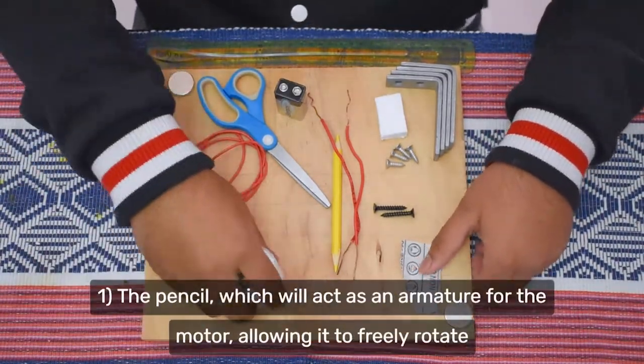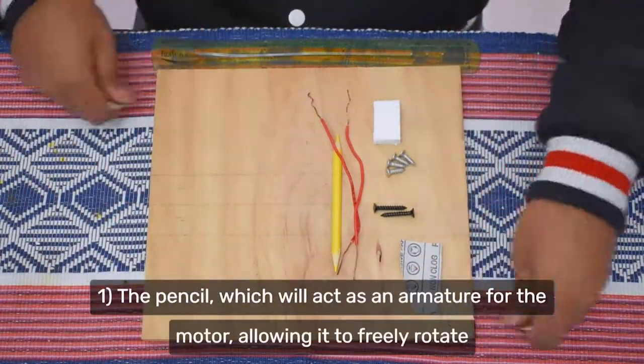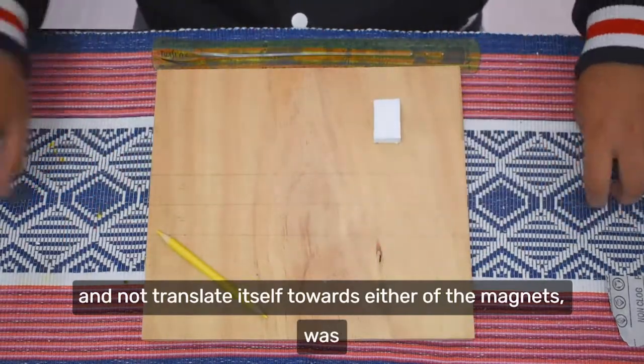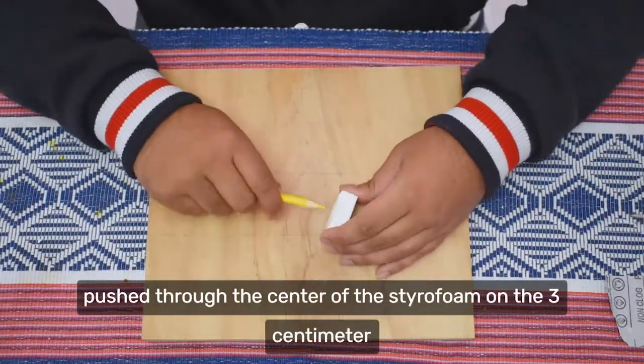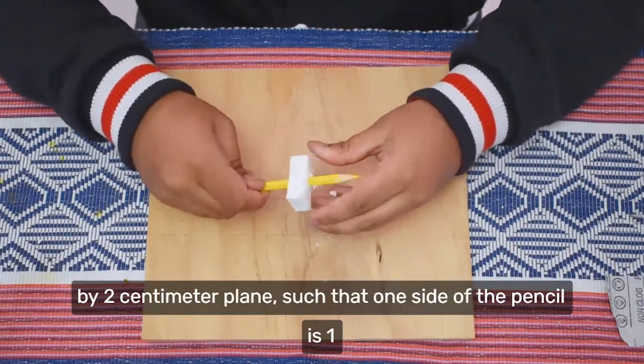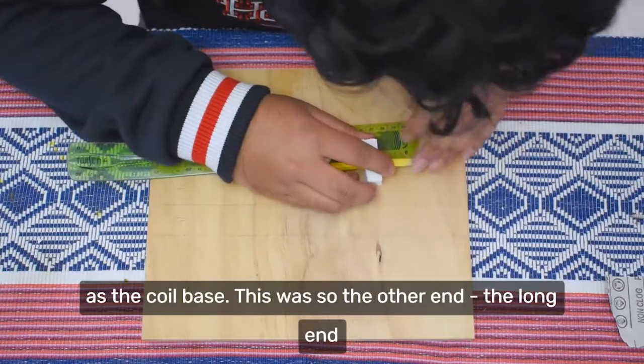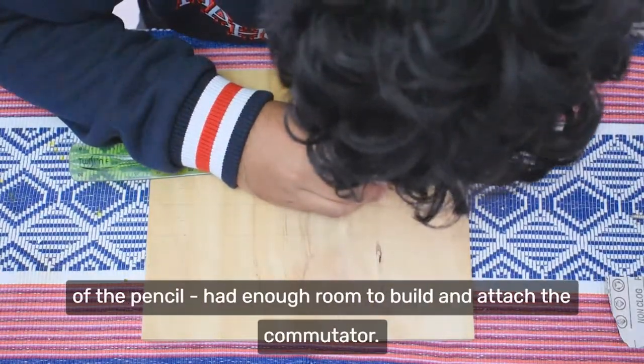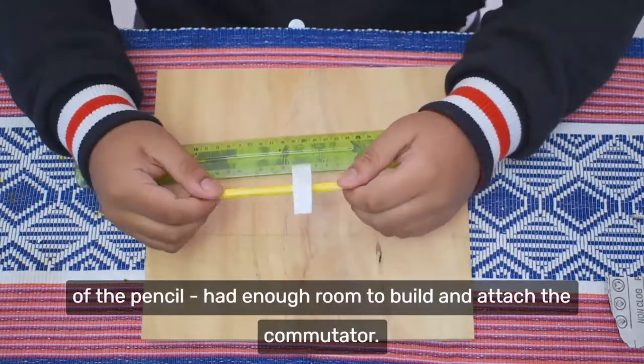Now for the method. 1. The pencil, which will act as an armature for the motor, allowing it to freely rotate and not translate itself towards either of the magnets, was pushed through the centre of the styrofoam on the 3cm x 2cm plane, such that 1 inch of the pencil is 1cm away from the styrofoam. The styrofoam will act as the coil base. The long end of the pencil had enough room to build and attach the commutator.